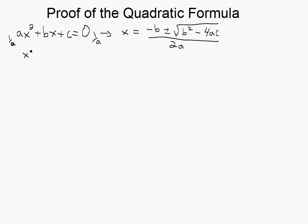Okay, so we'll get x² + (b/a)x + c/a = 0. Zero divided by a is zero.